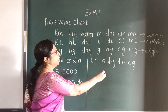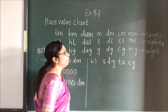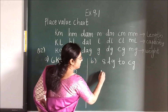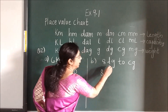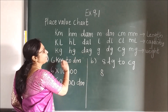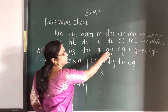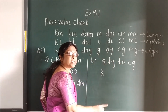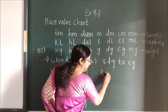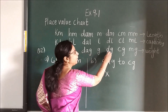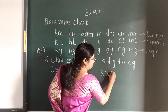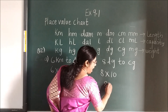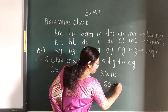Here also — DG to CG. Take this number. DG to CG — where is DG? Here. And CG is here. We are moving which side? Right side. Multiply. How many times? 1. So 10. Now multiply and you get the answer.